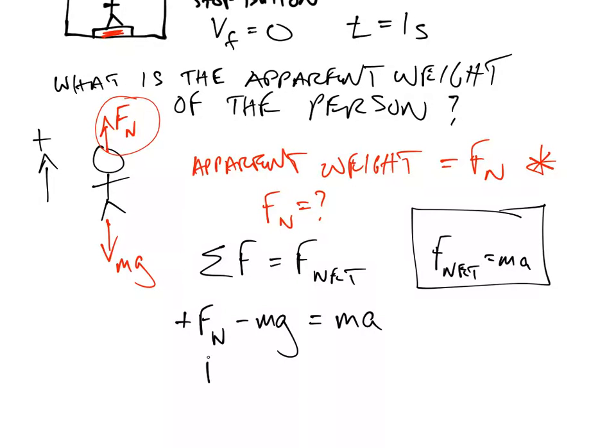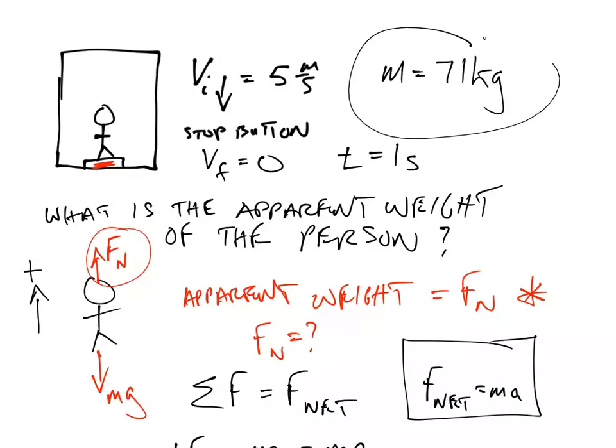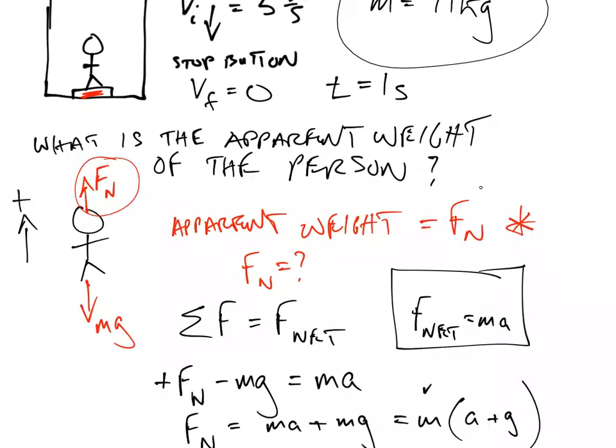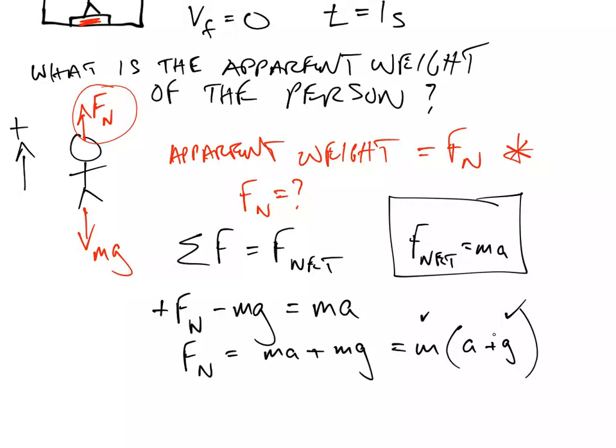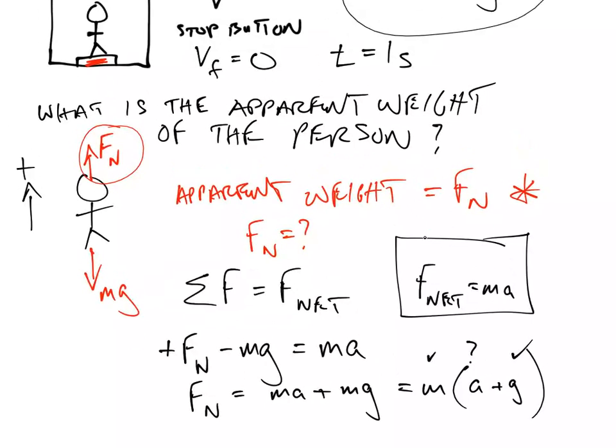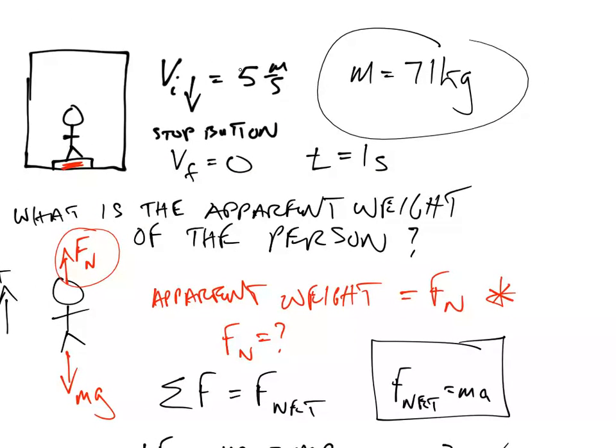Now, if I want to find Fn, I can just simply say it's equal to M A plus Mg. And I can factor out the M, and I can go A plus G. And now I'm almost done because, of course, I know M. That's 71. That was given in the problem up here. And I also know G. That's 9.8. But, uh-oh, I don't know what A is. But there is enough information in this problem to find A.